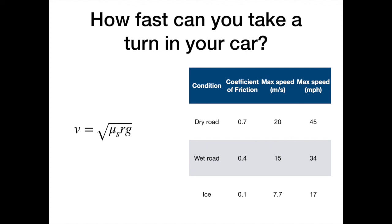And in icy conditions, which we will probably have coming up in the next few months, you have to go really slow. So in that case, the maximum speed that you can take the turn will be 17 miles per hour. So this is a PSA. When the roads are wet or icy, especially icy, make sure you slow down.